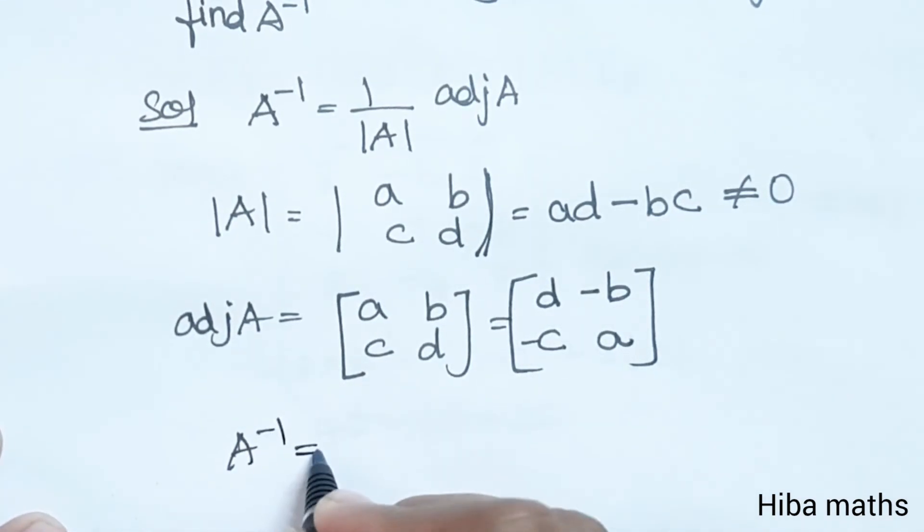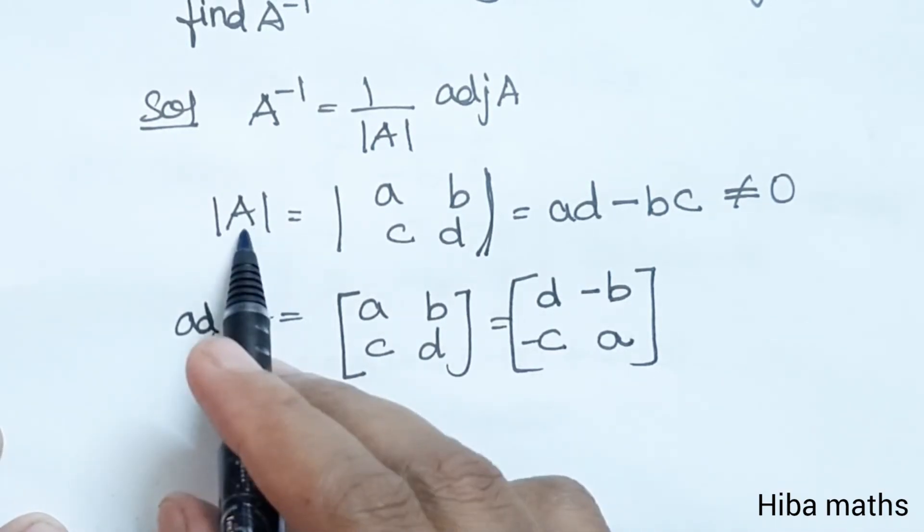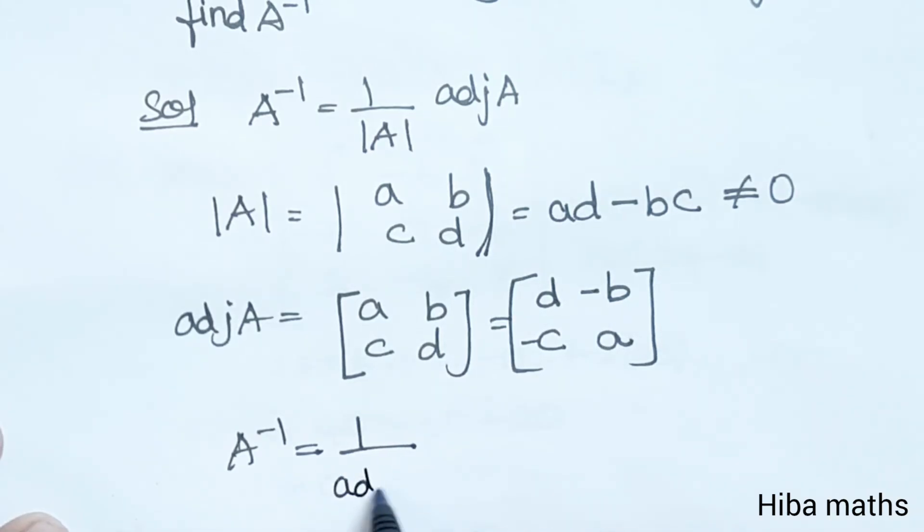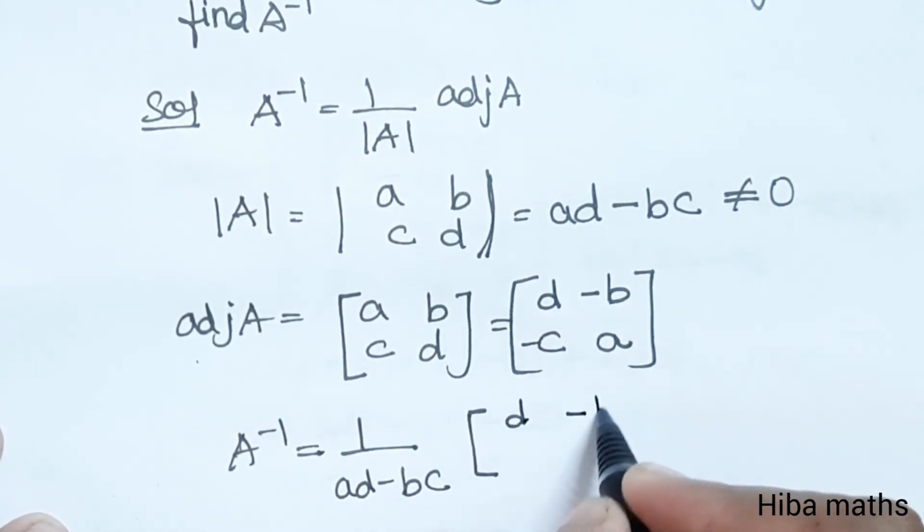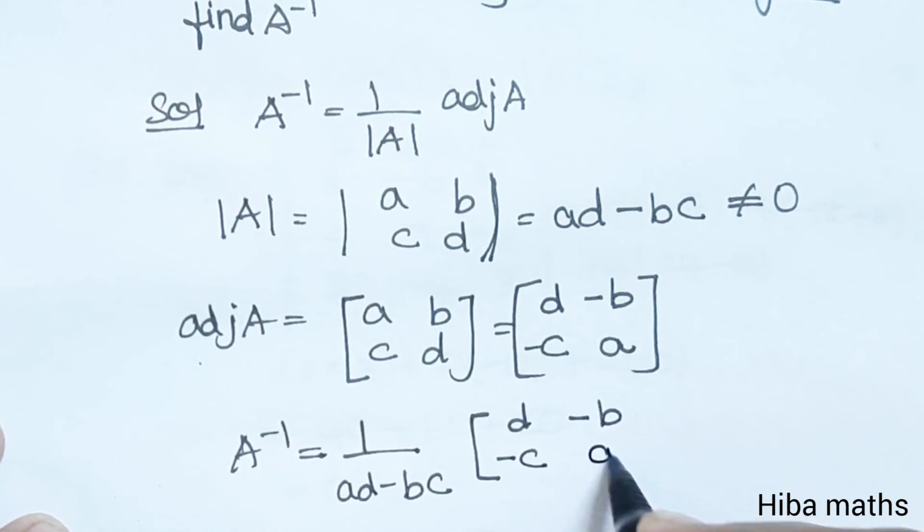Now A inverse equals 1 by modulus of A value, which is ad minus bc, into adjoint of A value: [[d, minus b], [minus c, a]].